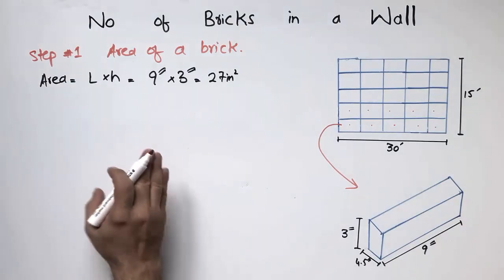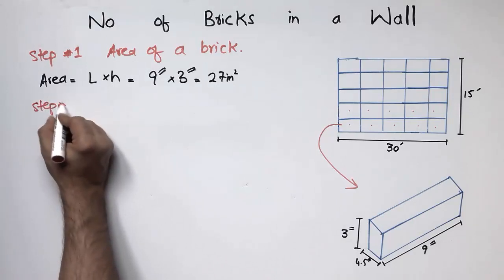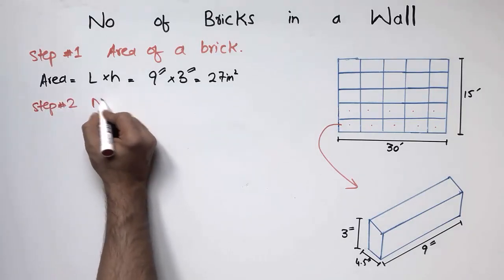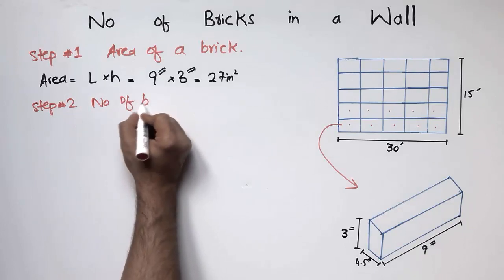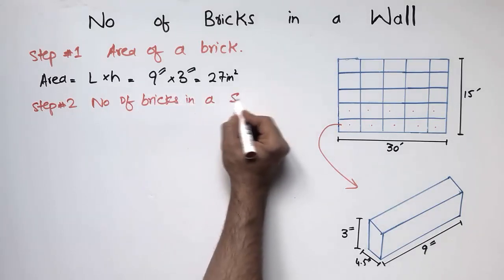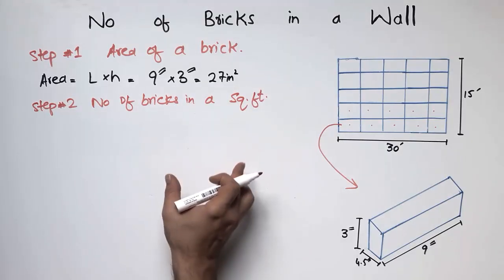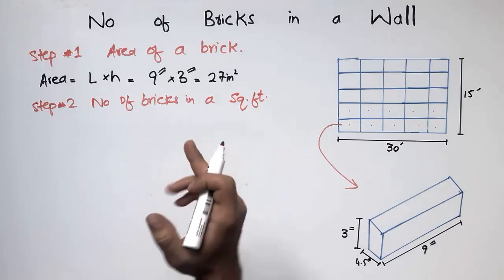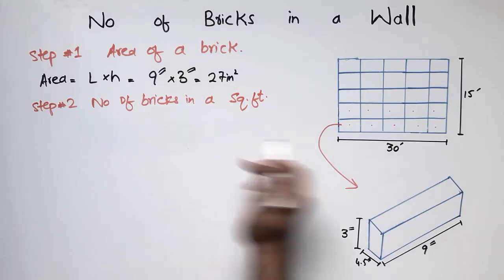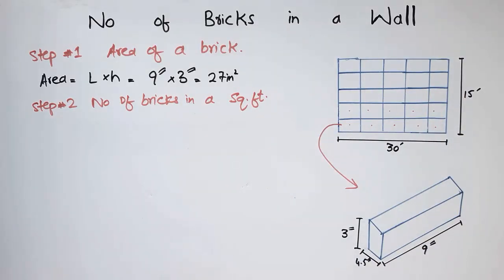The second step is to find the number of bricks in one square foot. I will get the number of bricks in one square foot and then multiply that number by the total area of the wall to get the total number of bricks. So the second step shows the number of bricks in one square foot.